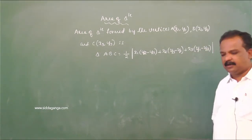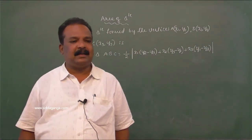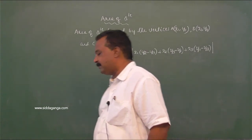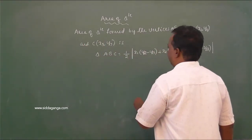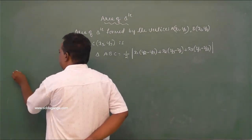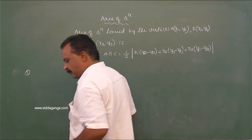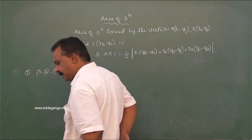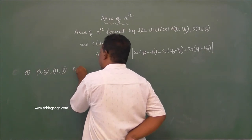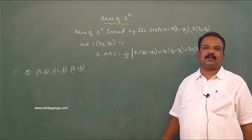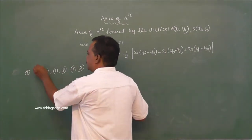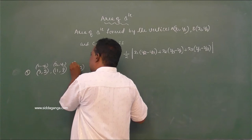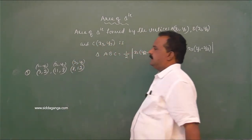The area of a triangle is always expressed in square units. The modulus ensures the result is positive — if the value is negative, we take the positive value. Now let us take one simple problem with vertices (3, 2), (11, 8), and (8, 12). Take (3,2) as (x1,y1), (11,8) as (x2,y2), and (8,12) as (x3,y3).